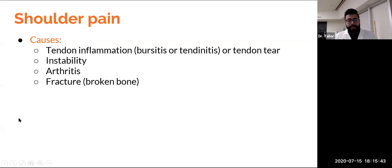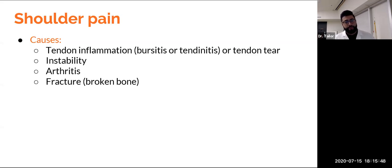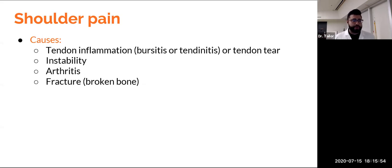Getting into the next joint is shoulder — a big area with many parts: the rotator cuff, the bursa, arthritis can happen, broken bones can happen, instability from dislocations can happen. There are many reasons why.